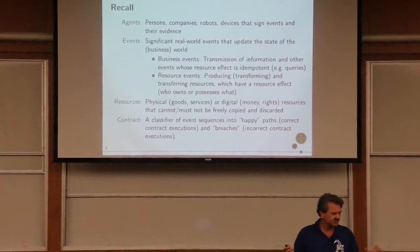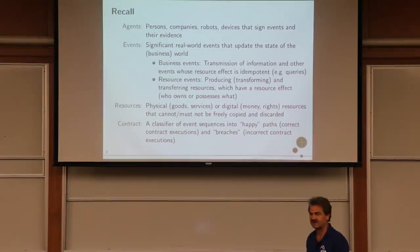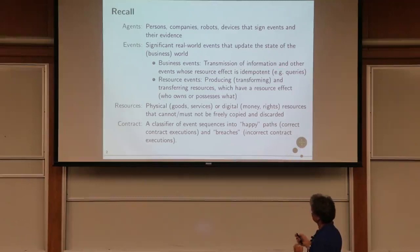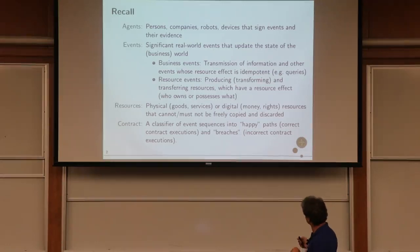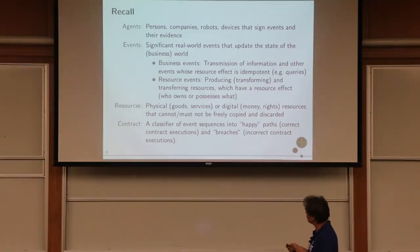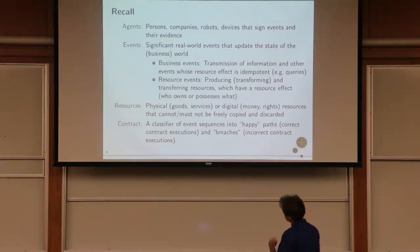Events are significant real-world events, including business events, but we won't talk much about those because a business event impacts the state of knowledge but not what resource transfers can be made later. The resource effect of business events is idempotent — doing it once or multiple times gives nil resource effect. We focus on resource events: producing and transferring resources among agents. Resources are usually physical or digital goods, and the main goal is a trustworthy way of not copying or duplicating them. A contract is a classifier of event sequences.